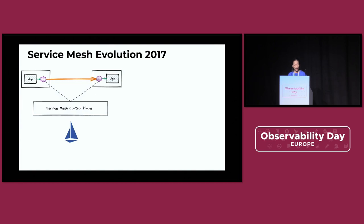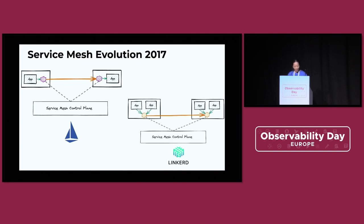So in 2017, the Istio project was launched with the sidecar approach, where every single service request would go through the sidecar to automatically provide mutual TLS encryption upgrade, automatic traffic shifting, and observability for you. Also back then in 2017, the LinkedIn project launched another notion of service mesh without using a sidecar, essentially using a node proxy.